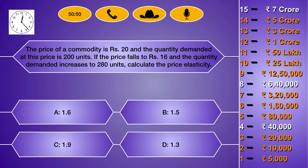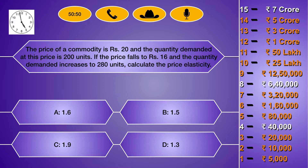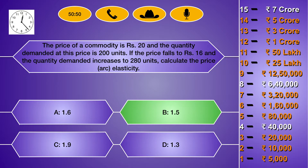The price of a commodity is Rs.20 and the quantity demanded at this price is 200 units. If the price falls to Rs.16 and the quantity demanded increases to 280 units, calculate the price elasticity. Options are: (A) 1.6, (B) 1.5, (C) 1.9, (D) 1.3. The answer is option B, i.e. 1.5.